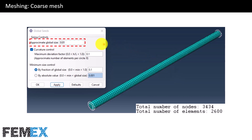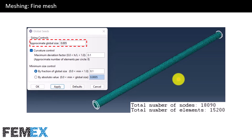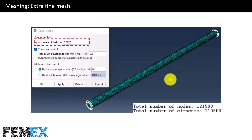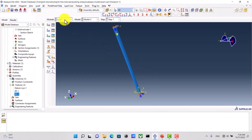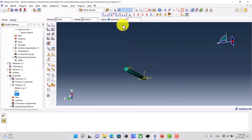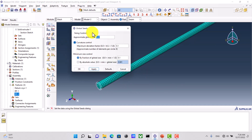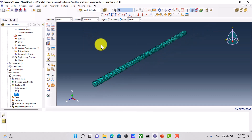Here we have the coarse mesh with the global element size set to 0.01 — and here we have the number of nodes and total number of elements. Here we have the fine mesh with global element size 0.005, along with the total number of nodes and elements. And here we have the extra fine mesh with global element size 0.0025, showing the total number of nodes and elements. Now I go to Abaqus to show you these settings — I go to the mesh module, and here you can see the coarse mesh, the fine mesh, and the extra fine mesh.